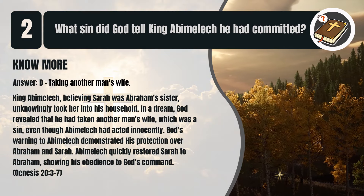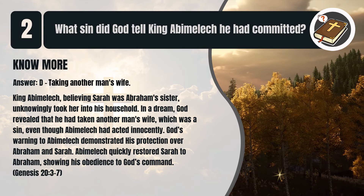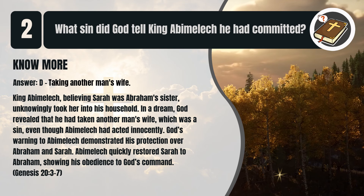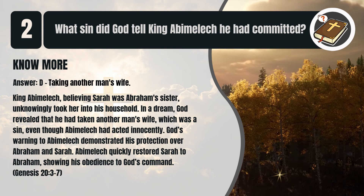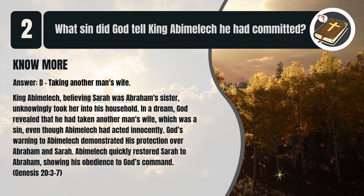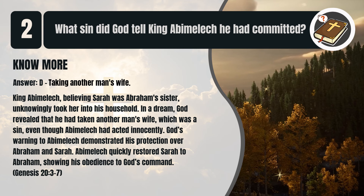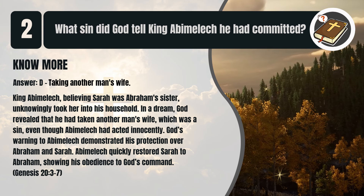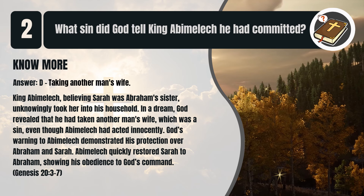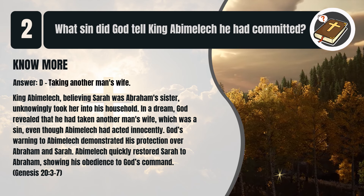That's D. Taking another man's wife. King Abimelech, believing Sarah was Abraham's sister, unknowingly took her into his household. In a dream, God revealed that he had taken another man's wife, which was a sin, even though Abimelech had acted innocently. God's warning demonstrated his protection over Abraham and Sarah. Abimelech quickly restored Sarah to Abraham, showing his obedience to God's command. Genesis chapter 20 verses 3 to 7.